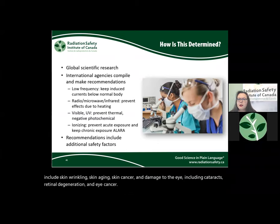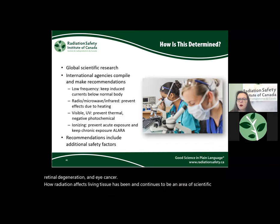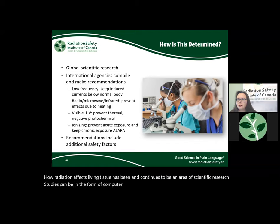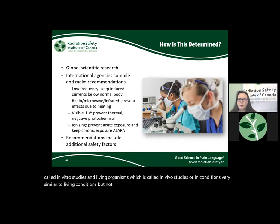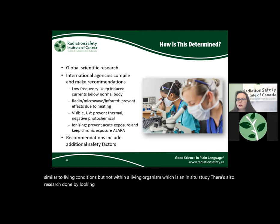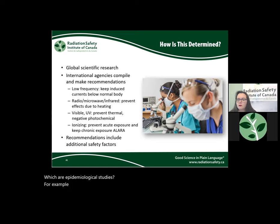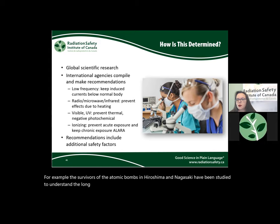How radiation affects living tissue has been and continues to be an area of scientific research. Studies can be in the form of computer simulations, using cells in artificial conditions — called in vitro studies — in living organisms, called in vivo studies, or in conditions very similar to living conditions but not within a living organism, called in-situ studies. There is also epidemiological research done by looking at populations of humans. For example, survivors of the atomic bombs in Hiroshima and Nagasaki have been studied to understand the long-term effects of radiation exposure, and this information has been used to inform radiation protection guidelines.